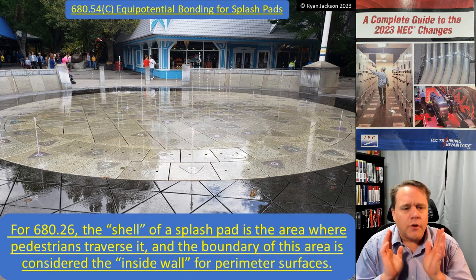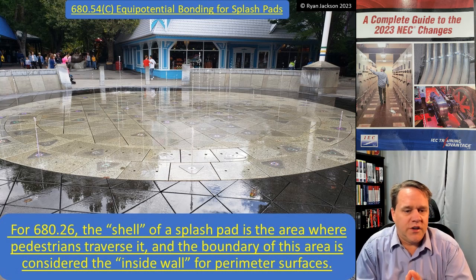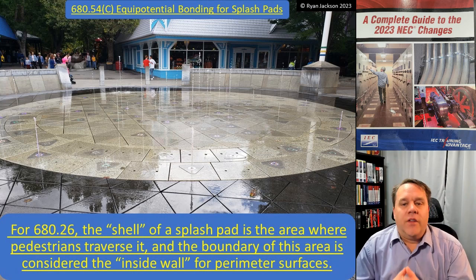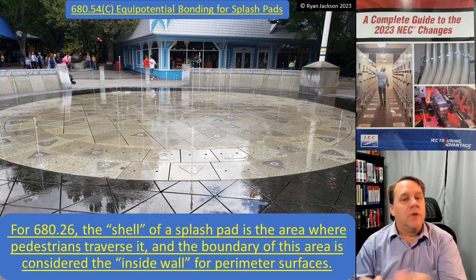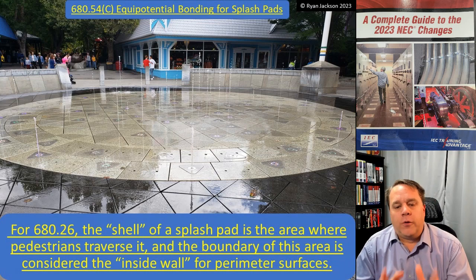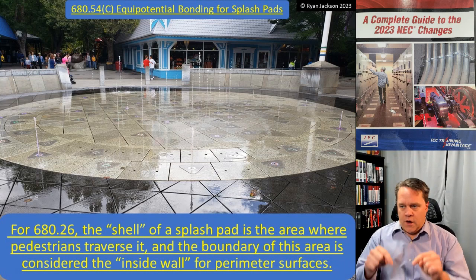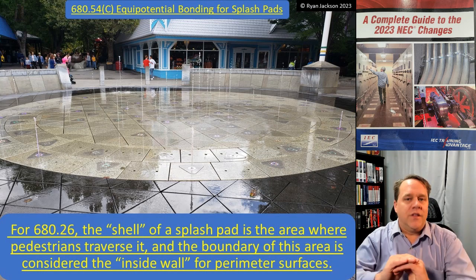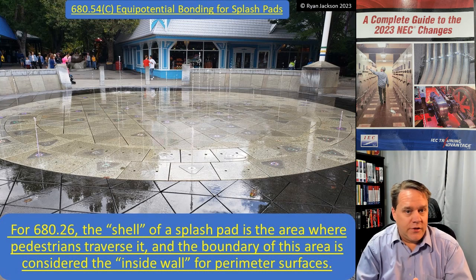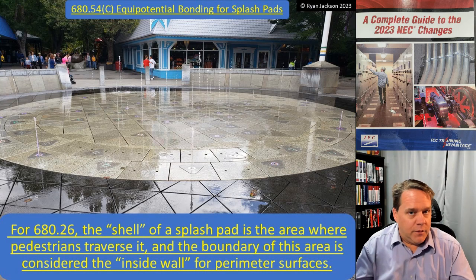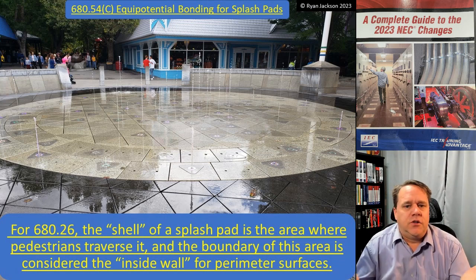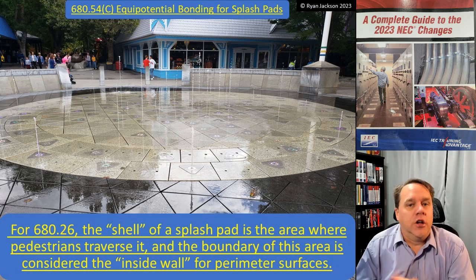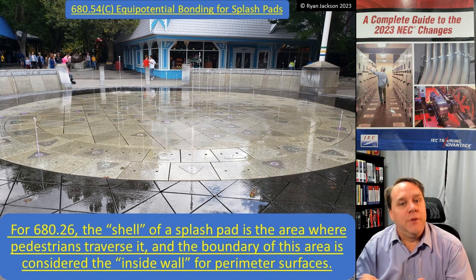For the purposes of 680.26, the shell of a splash pad is the area where pedestrians traverse it, and the boundary of this area is considered the inside wall for perimeter surfaces. Wherever the people walk, that's the shell — go out three feet, that's the perimeter surface. Bond all of that together, probably using rebar in the concrete, then bond that to the motor or anything electrical within five feet of the area, and you're good to go.